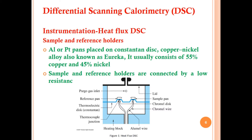The right side bottom shows a heating block, thermocouple junction, thermoelectric disc, constantan, reference pan, and purge gas inlet. We can use different types of purge gases in DSC — nitrogen, argon, carbon dioxide, and others. A thermocouple is a sensor that measures the temperature difference between two objects, meaning the reference and the sample.